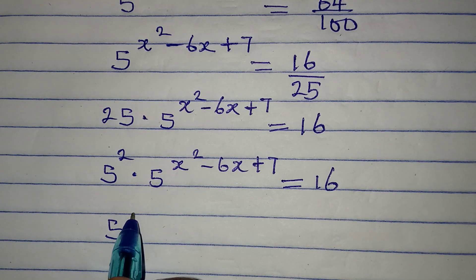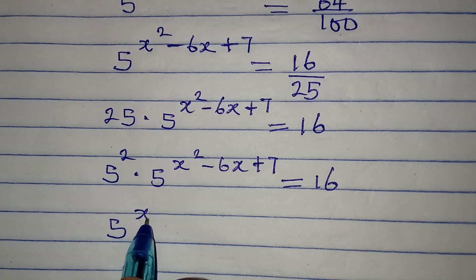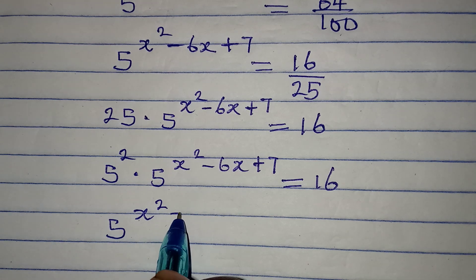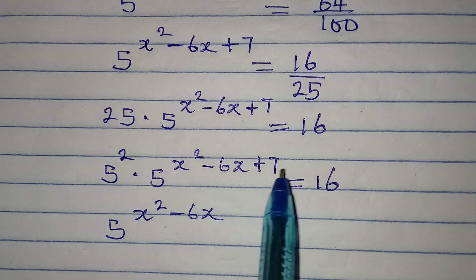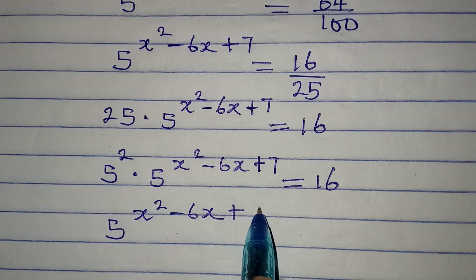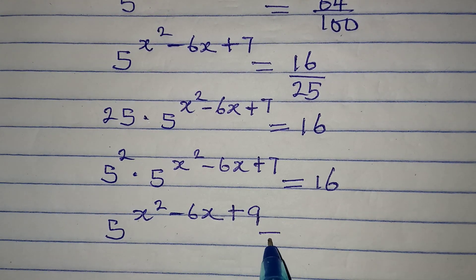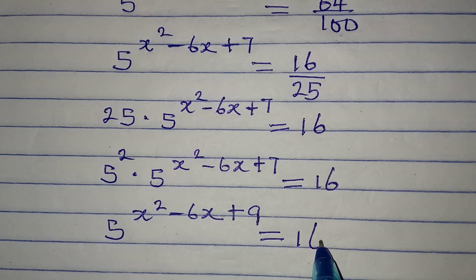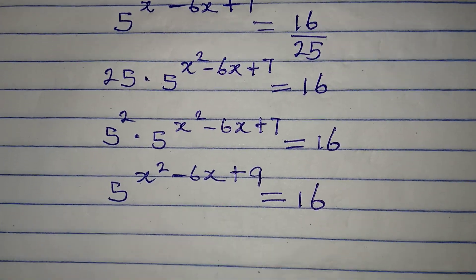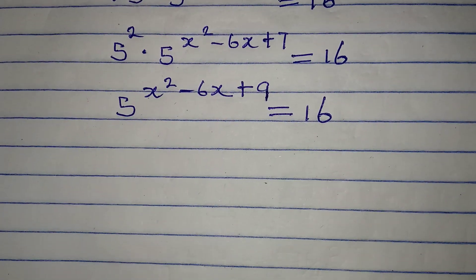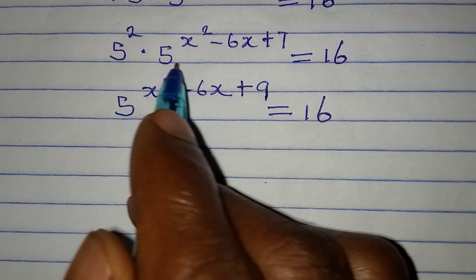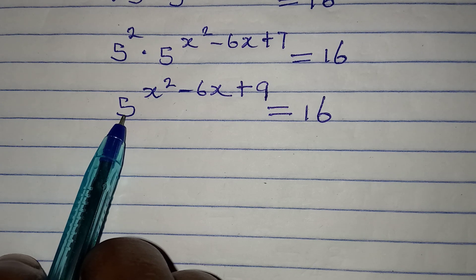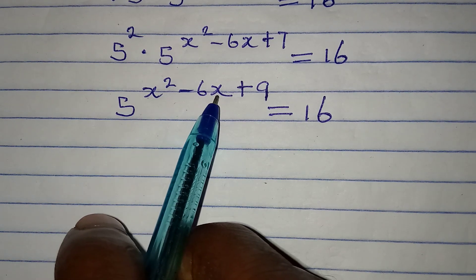When I do that, I'm going to have 5 to the power of x squared minus 6x, and 2 plus 7 will give us plus 9 — so x squared minus 6x plus 9 — and the whole of this is equal to 16.